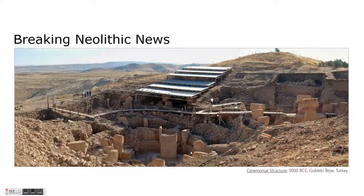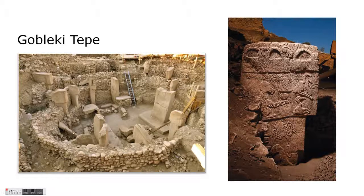What makes Göbekli Tepe interesting compared to Çatalhöyük and Jericho — both settled communities where people lived — is that this is not a town. It appears to be a temple structure. There's no evidence that people lived here, but there is evidence they built it and came here to perform some sort of worship. The site consists of pits dug into the ground with rock walls on either side, supported by giant posts made of stone that are carved to represent various kinds of deities.